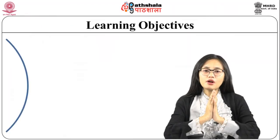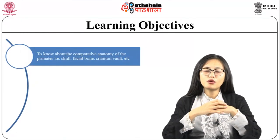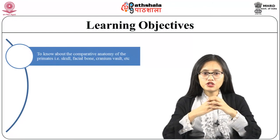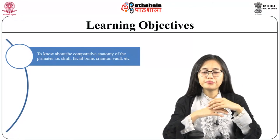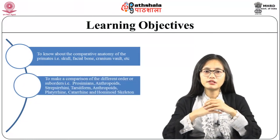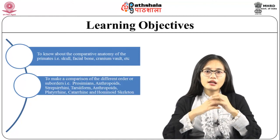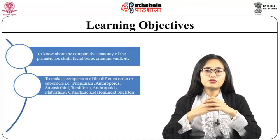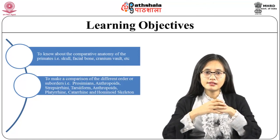The learning objectives of the module are to know about the comparative anatomy of the primates — that is skull, facial bone, cranium vault, etc. — to make a comparison of the different orders or suborders: prosimians, anthropoids, strepsirhini, tarsiform, anthropoids, platyrrhine, catarrhine, and hominoid skeleton, and to present a brief view of primate dentition.